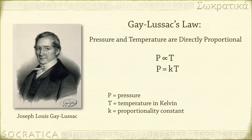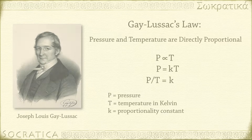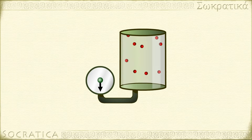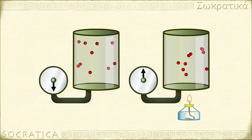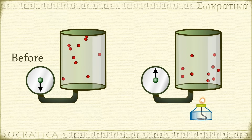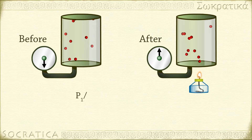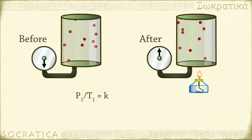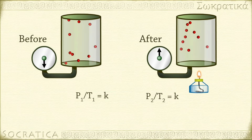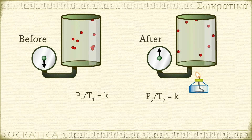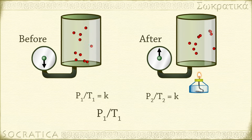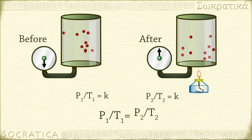We can rearrange this equation so it reads P over T equals K — the ratio of pressure to temperature is a constant, K. Very often Gay-Lussac's law is used to compare two situations, a before and an after. In that case, you can write Gay-Lussac's law as P1 over T1 equals P2 over T2.